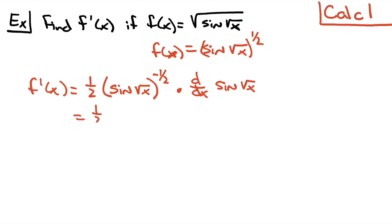So then we're going to have a 1 half times the sine square root of x raised to the negative 1 half. Now again, I have an outside function, which is sine. I have an inside function, which is square root of x. So I'm going to take the derivative of that outside function, which will be cosine.